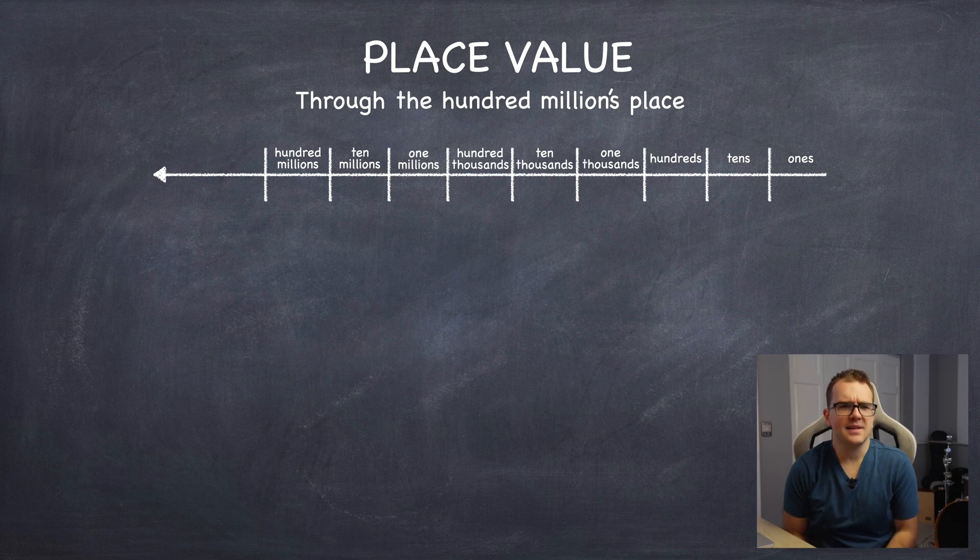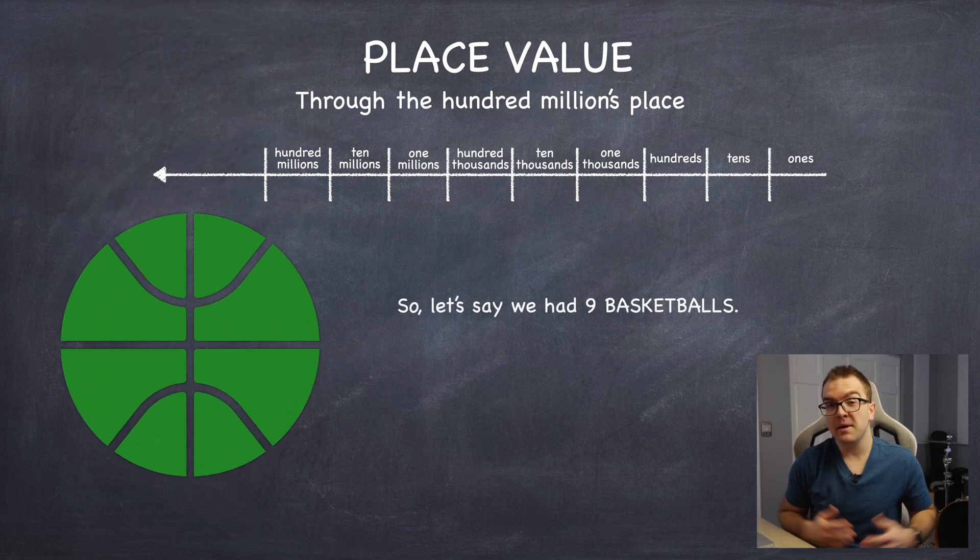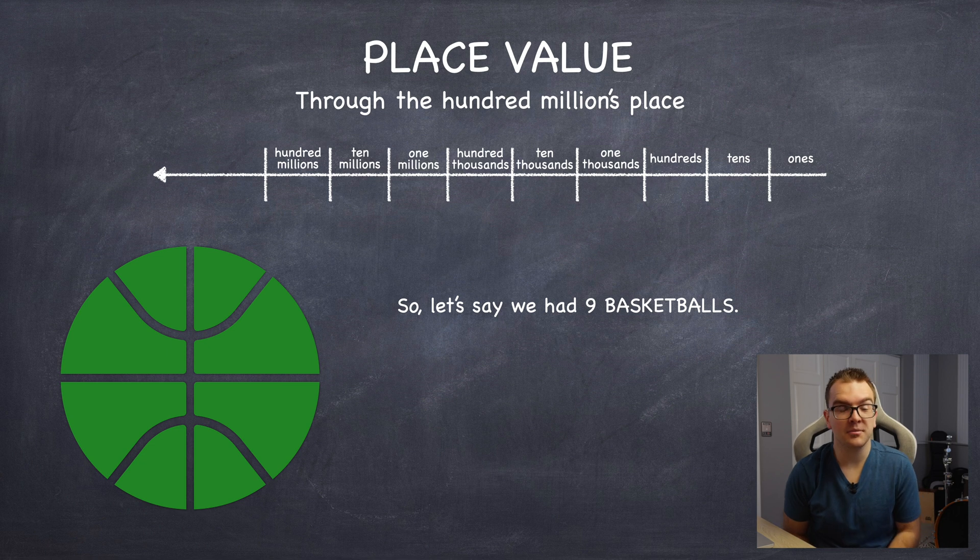Let's take a look at some examples. Let's say we have nine basketballs. Now, if we were to place nine on our place value chart, we would put nine in the ones place here.